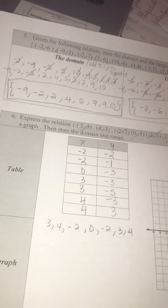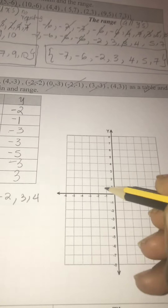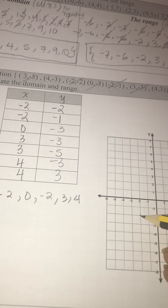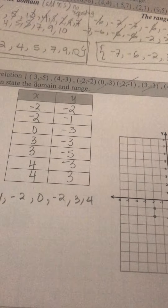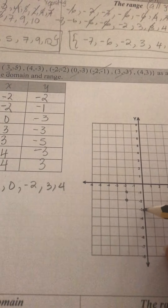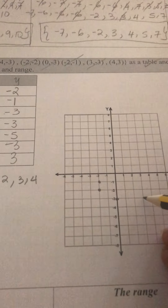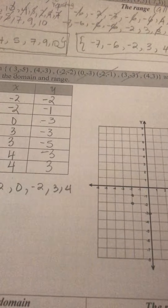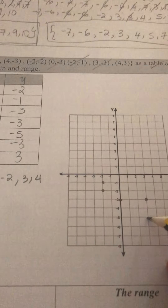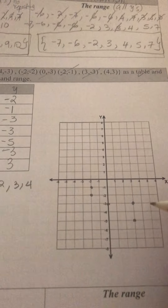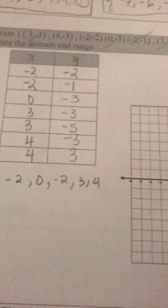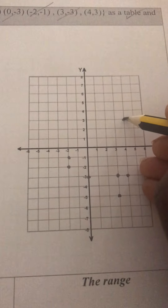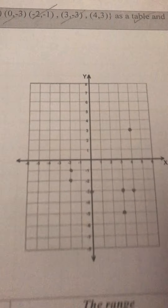They want me to do my graph now. So I go to my graph: negative 2 with negative 2, I put a dot. Negative 2 with negative 1, I put a dot. Then 0 with negative 3, I placed it. 3 with negative 3, I placed it. 3 with negative 5. 4 with negative 3. And I labeled my X and my Y.